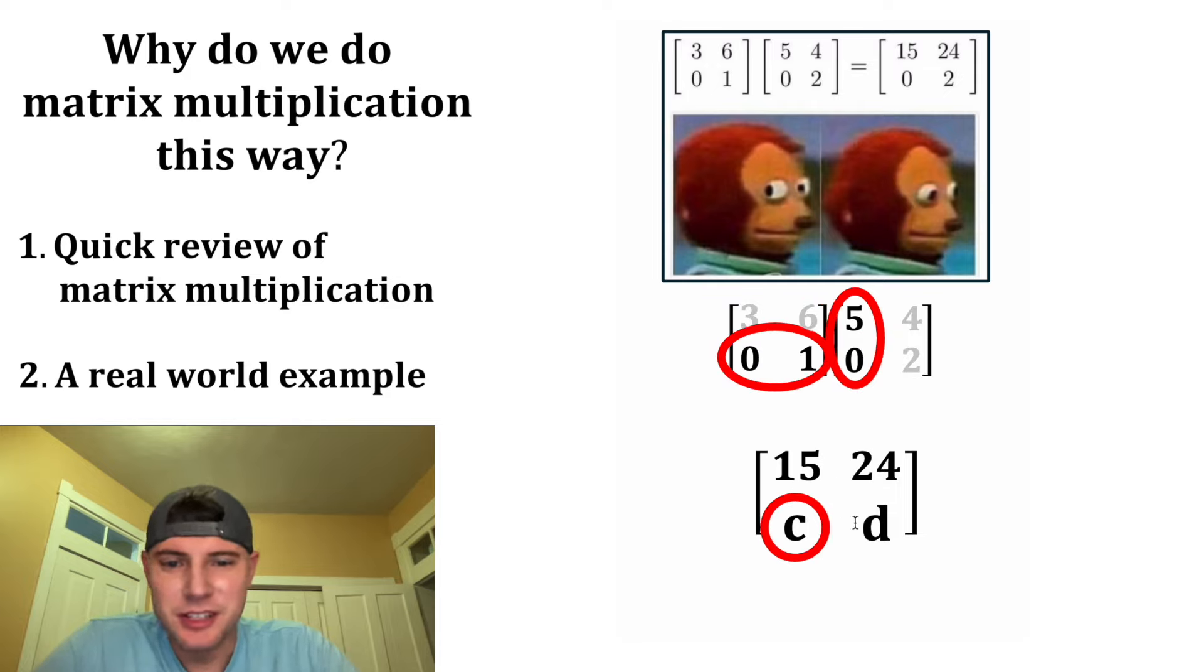And the same thing for C. This is the second row, first column, so it's going to be second row and first column. And that gives us zero times five plus one times zero, which is just zero.